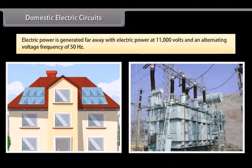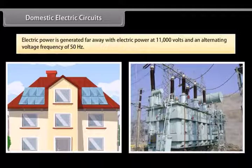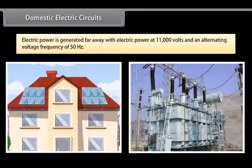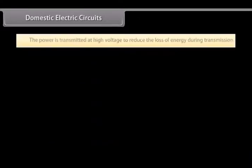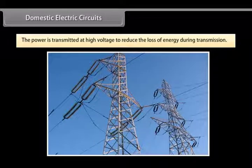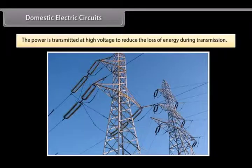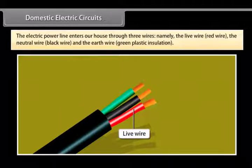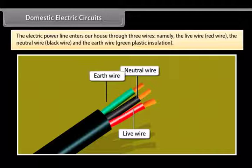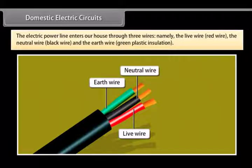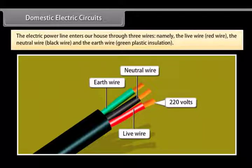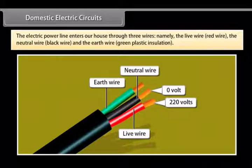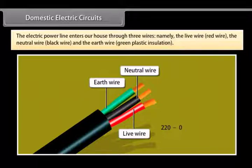Domestic Electrical Circuits. Electric power is generated far away from the places it is consumed. At the generating station, the electric power is generated at 11,000 volts with an alternating voltage frequency of 50 hertz. The power is transmitted to the places of consumption at high voltage to reduce the loss of energy during transmission. The electric power line enters our house through three wires, namely, the live wire (red wire), the neutral wire (black wire), and the earth wire (green plastic insulation). The live wire has a high potential of 220 volts and the neutral wire has zero potential. Thus, the potential difference between the live wire and the neutral wire is 220 minus 0 which equals 220 volts.